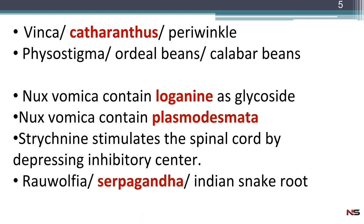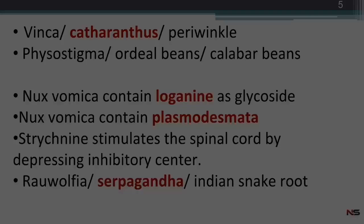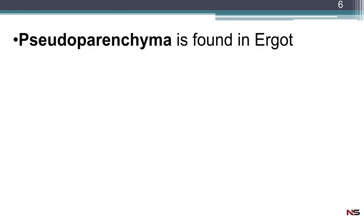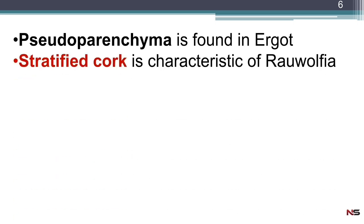Rauwolfia is also known as sarpagandha or Indian snake root. In ergot, pseudoparenchyma is present. Stratified cork is a very important characteristic of rauwolfia — exam questions often ask which drug has stratified cork, and the answer is rauwolfia (sarpagandha). This comes regularly in competitive exams.